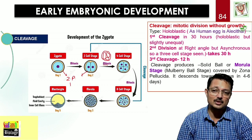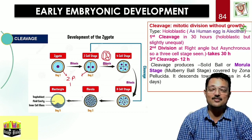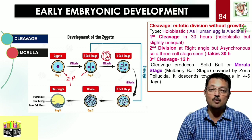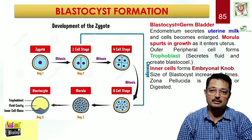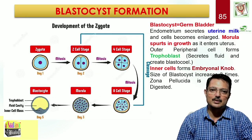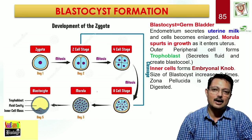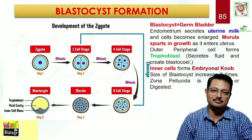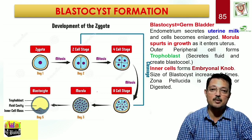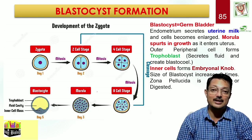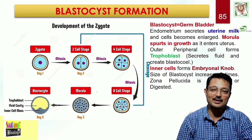Let us understand the processes: after fertilization, cleavage takes place; then morula formation; then blastula formation; then implantation. After fertilization, the endometrial cells enlarge and start storing nutrients, releasing a fluid called uterine milk. As a result, the endometrial cells become very enlarged to receive the fertilized ovum. As the morula rolls down into the uterus, it comes in contact with these cells and gets plenty of nutrients, causing it to spurt in growth.